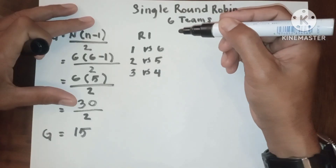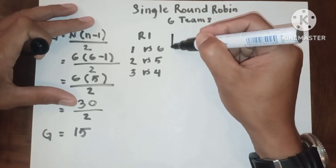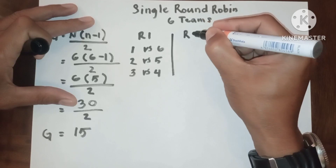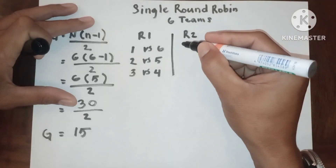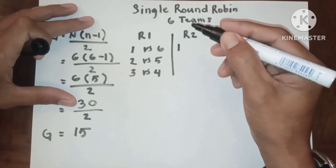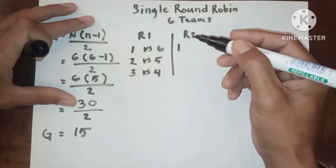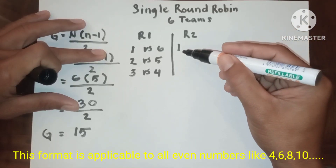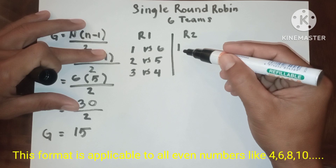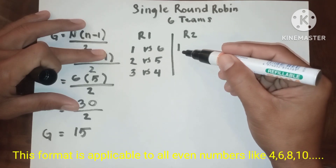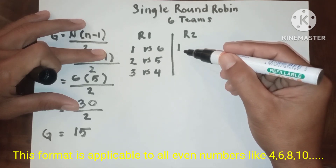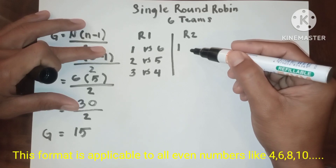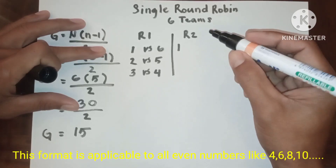Now let's proceed to round two. Always remember that team one should be placed in this position permanently, and all other teams should rotate counter-clockwise.